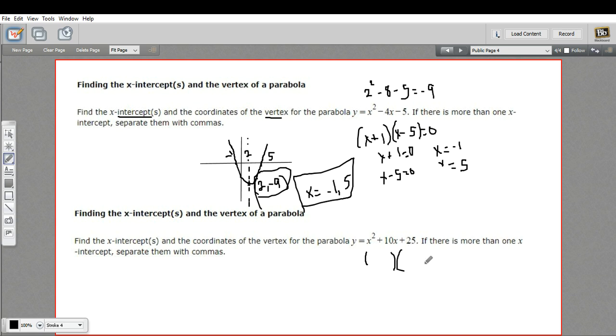So to find those x-intercepts, I want to factor. Everything's positive here, so these will both be positive. And I need to multiply to 25 and add to 10. That's pretty easy. That's 5 and 5. And when I solve these, set each of these equal to 0 and solve them,